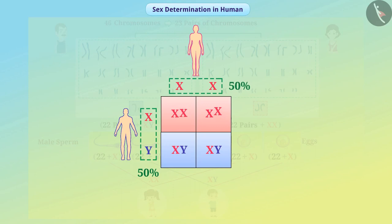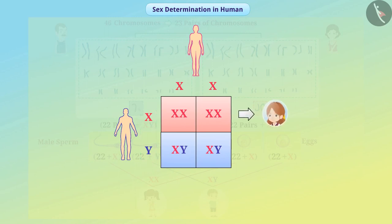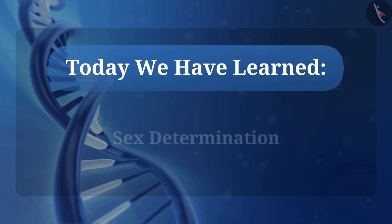All children get an X chromosome from the mother, so their sex determination depends on the chromosome obtained from the father. If the child inherits the X chromosome from the father, it will be a girl; if the child inherits the Y chromosome from the father, the child will be a boy. This happens completely at random, so it is wrong to hold the father or mother responsible for not having an infant of any particular gender.